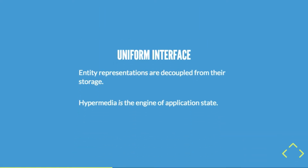The uniform interface principle means entity representations are decoupled from their storage. If you have a MySQL database, you don't just let someone POST random SQL and get a response back — you abstract it away. You say we're going to have 'users' or 'articles,' creating a uniform interface even if data is in MySQL or MongoDB. Whether it's a field versus a node, you can still access them in the same way. That's the uniform interface principle.